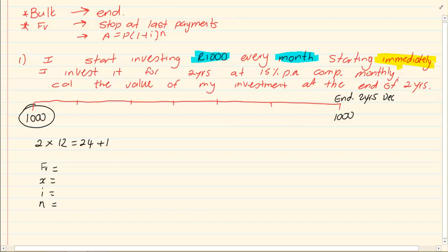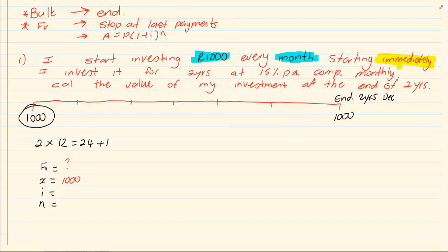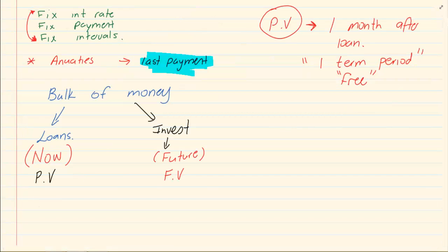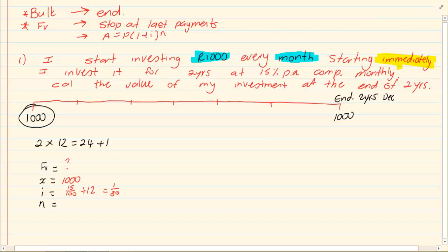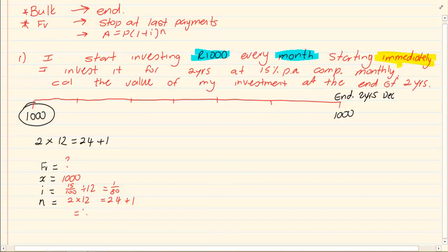Working the future value — you want to calculate how much money you will have in the future. How much am I investing? I am putting in a thousand rand every month, a consistent payment. It's not like one is a thousand rand, one is three hundred rand, one is five hundred rand. It's a consistent payment of a thousand rand, because annuities require fixed payments. My interest is 15% compounded monthly, so I'm dividing by 12, which gives me one over eighty. Now N is where you have to be careful: two times twelve is twenty-four, but since I am starting immediately I have plus one, so my N is actually twenty-five.